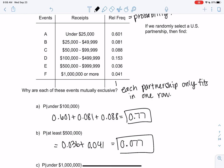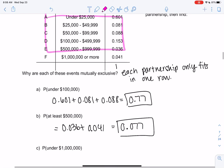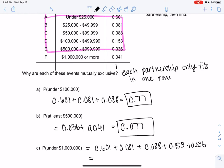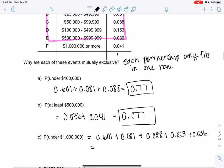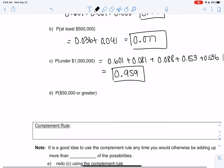Just a couple more. Under a million would be all of these. A million or more is F, so I would just add up all of the rows except for the last one. And I will show you a shortcut shortly. So add them all up except for the last row: 601, 081, 088, 153, and 036. I got 959, so 95% of them, almost 96%, are under a million.